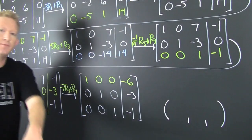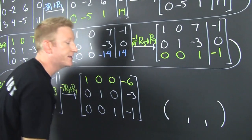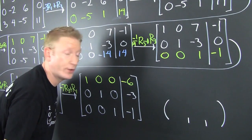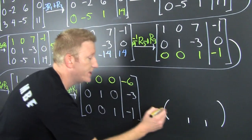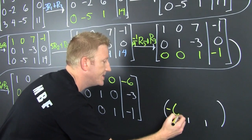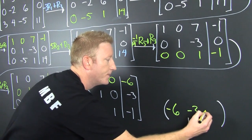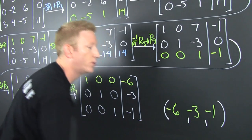The solution to my system is a point. This one is minus 6, minus 3, and minus 1.